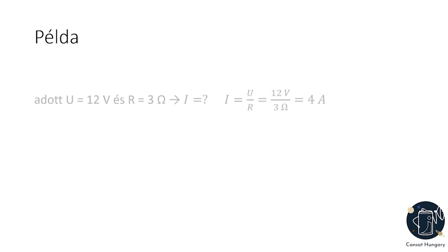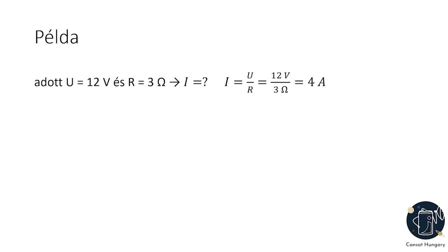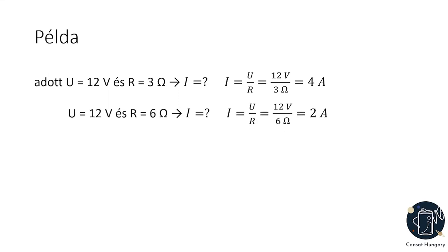Nézzünk egy példát. Hogyha adott U = 12 V feszültség és R = 3 Ω ellenállás, akkor mekkora az áram? Ohm törvényét az áramra átrendezve: I = U / R = 12 V / 3 Ω = 4 A. Hogyha változatlan 12 V feszültség mellett az ellenállást 6 ohmra növeljük, akkor 2 ampert kapunk. Tehát állandó feszültség mellett az ellenállás értékét növelve az áramnagysága csökken, azaz az áramnagyságát az ellenállás növelésével vagy csökkentésével szabályozhatjuk.